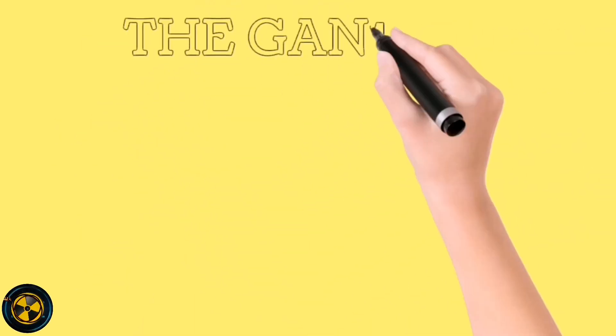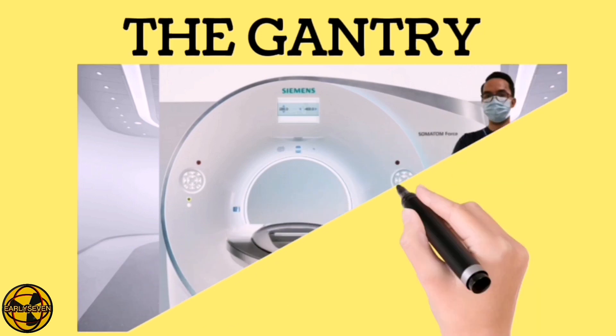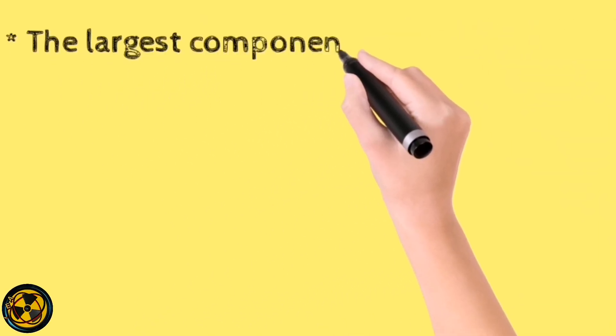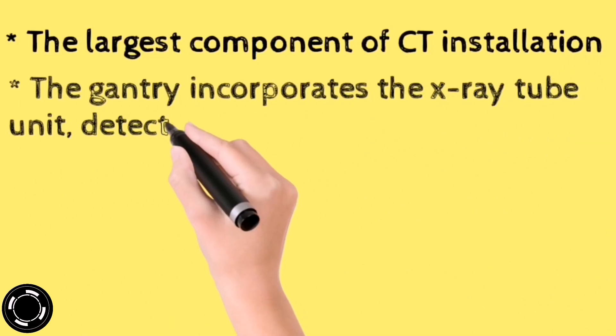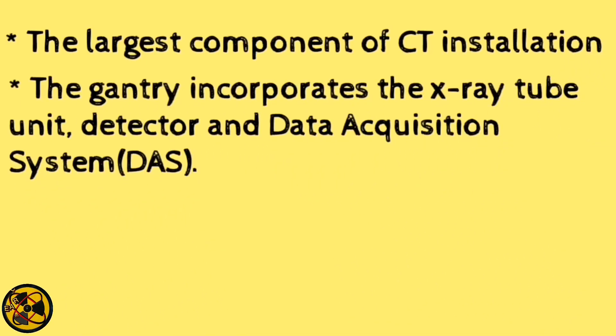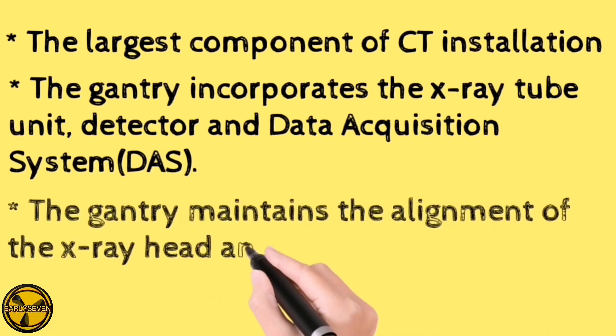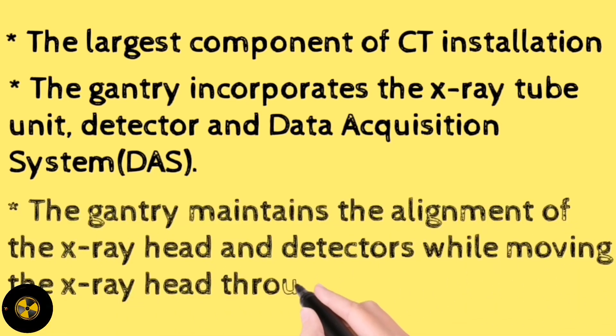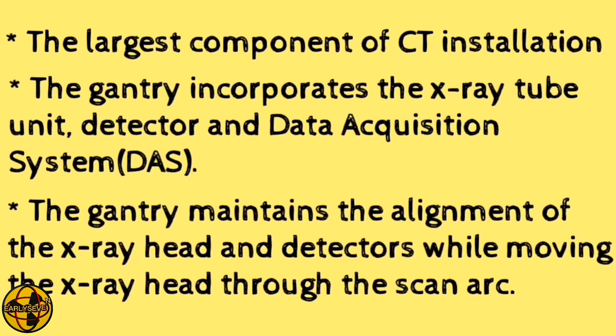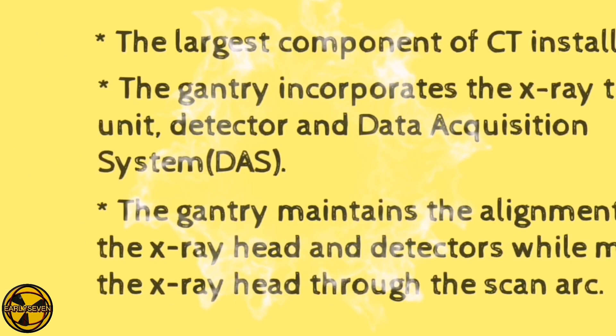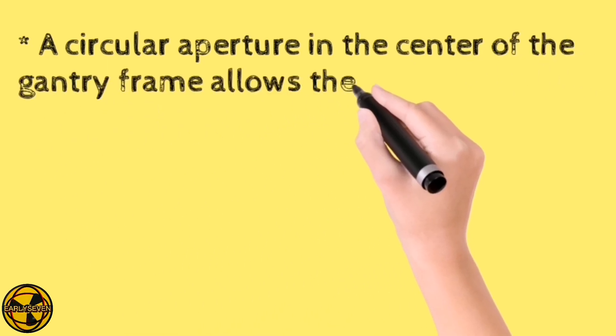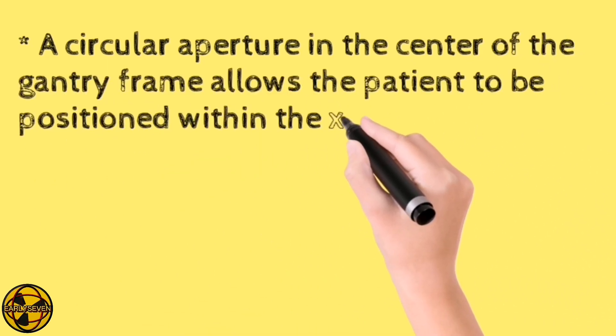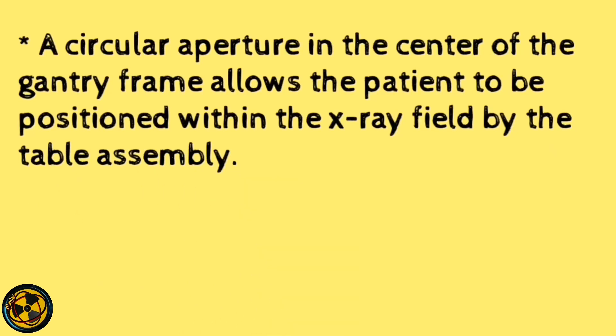Let us discuss the first component of a CT scanner which is the gantry. The gantry is the largest component of CT installation. The gantry incorporates the x-ray tube unit, detector and data acquisition system. The gantry maintains the alignment of the x-ray head and detectors while moving the x-ray head through the scan arc. A circular aperture in the center of the gantry frame allows the patient to be positioned within the x-ray field by the table assembly.